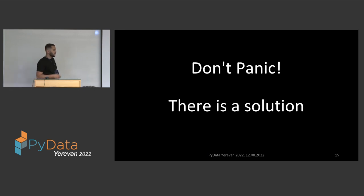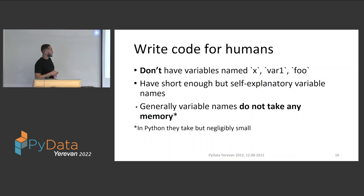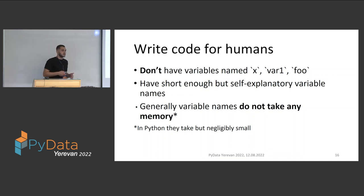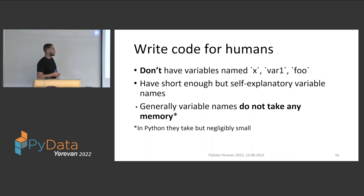Don't panic — there are solutions. Here are some advice to help you build a better project. First and simplest: don't have one-letter variables like x, w1, or foo — they don't say anything about your code. Your variables should be self-explanatory; anyone reading your code should understand what a function or variable does just by reading its name. Also, even something like 'alpha' is not one letter but still doesn't say much — you can just have a self-explanatory variable name.